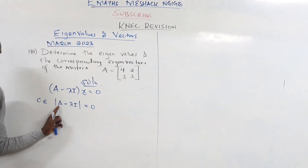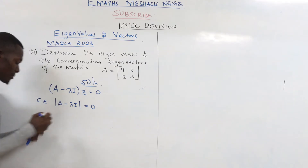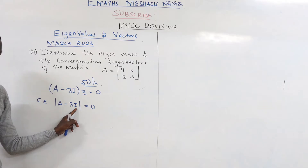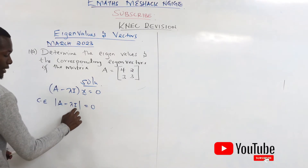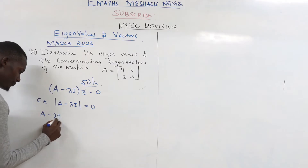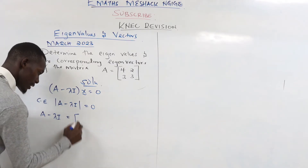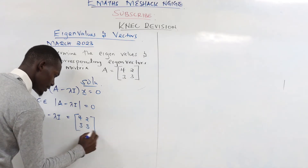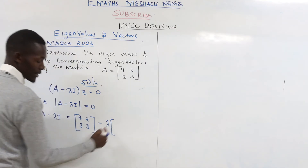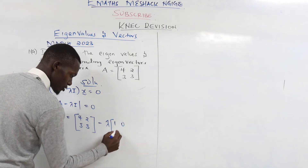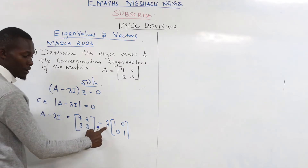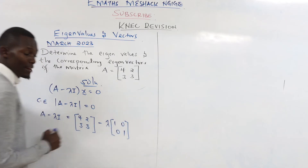This means you take your matrix A, then subtract another matrix. We have a value lambda, which is a constant, and then we have the identity matrix. So we allow our matrix A, then subtract lambda times the identity matrix. So A minus lambda I will be given by our matrix A = [4, 2; 3, 3], then minus lambda times the identity matrix. Remember, this one is a constant — when you have a constant outside of a matrix, it multiplies everything inside.